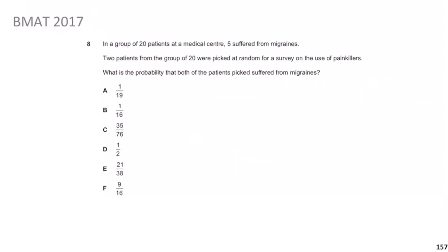In a group of 20 patients at a medical centre, five suffered from migraines. Two patients from the group of 20 are picked at random for a survey on the use of painkillers. What is the probability that both patients picked are suffering from migraines? Pause the video, give yourself a minute, then we'll go over the solution.